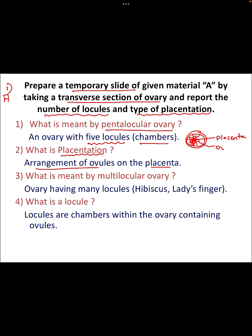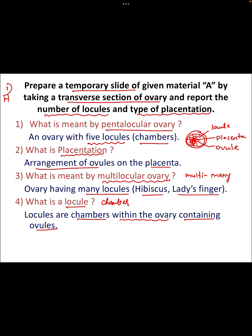What is meant by multilocular ovary? As the name indicates, 'multi' means many — an ovary having many locules. For example, hibiscus and lady's finger. What is a locule? A locule is nothing but the chamber. Locules are chambers within the ovary containing the ovules.